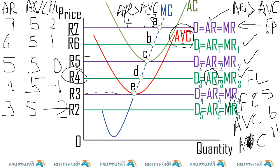I'll pick some amounts and you tell me: should the firm shut down or continue? Three rand fifty — continue. Any price above three rand, the firm should continue. Two rand 95 — shut down, because the price is less than average variable cost. Three rand two cents — continue, because that two cents makes it above AVC. Four rand — continue. Three rand — shut down. Two rand 99 — shut down. One rand — shut down. Five rand — continue. It's as simple as that.